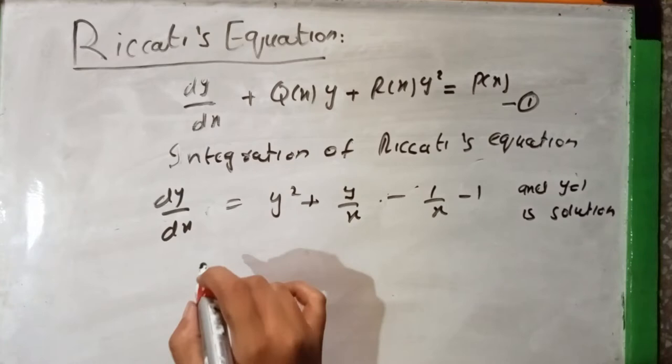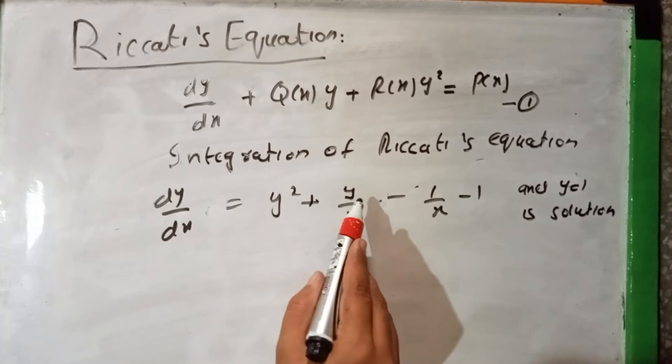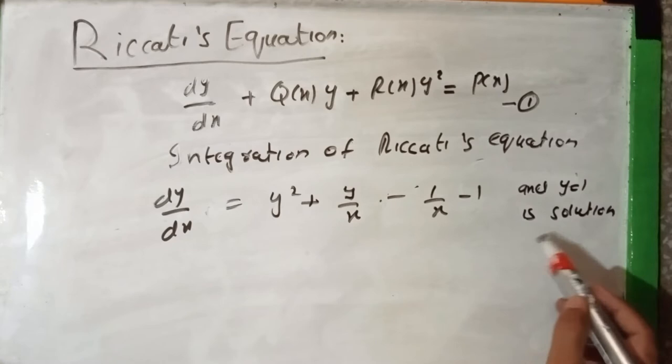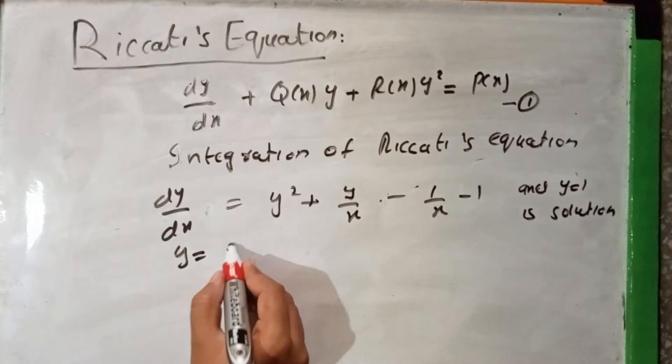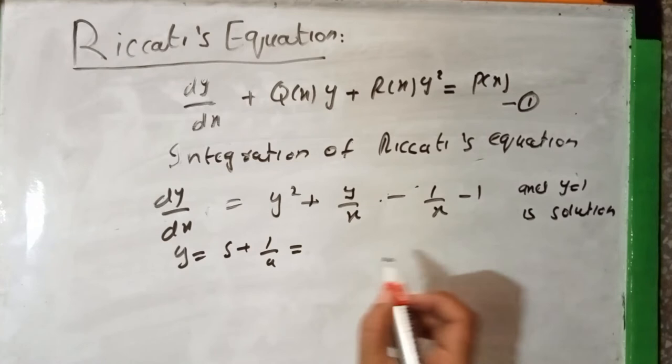The equation is du/dx equal to y² plus y/x minus 1/(x−1), and y equal to 1 is a known solution. We have considered y equal to s plus 1 over u, where s equals 1. So y becomes 1 plus 1 over u.